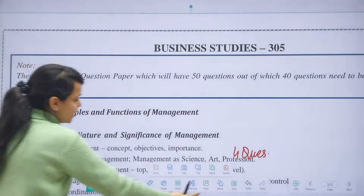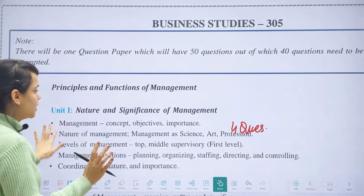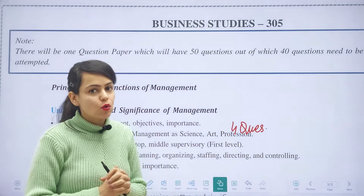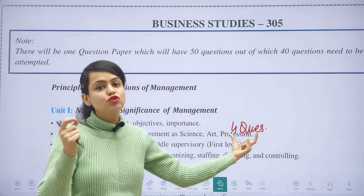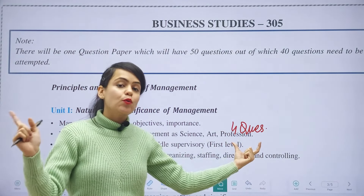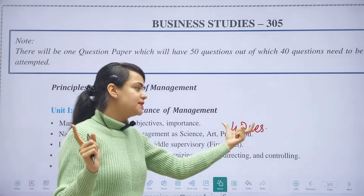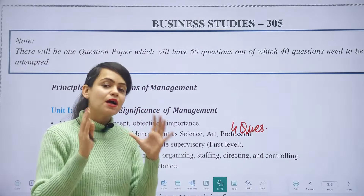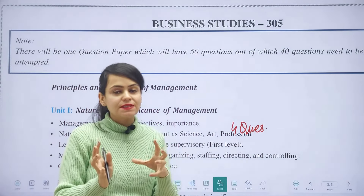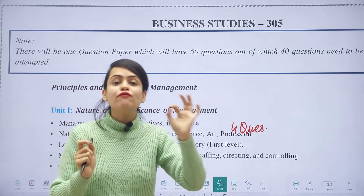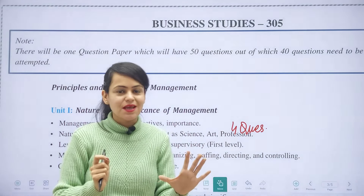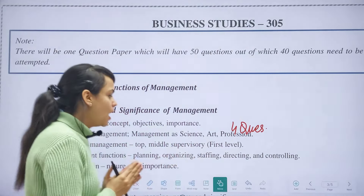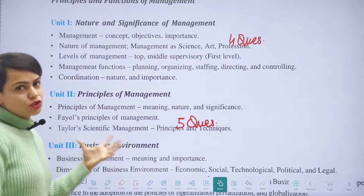So here in Business Studies, I will walk you through the syllabus. You will see that the paper is quite balanced. I have noted here how many questions were asked in the previous year's question paper. This is not the exact number but it gives us an idea that in every chapter, there are roughly 3 to 5 questions — each chapter has been given roughly equal importance, as you can see from the previous year paper analysis.